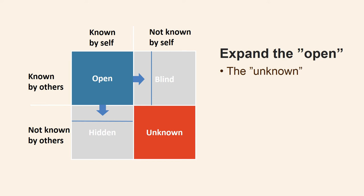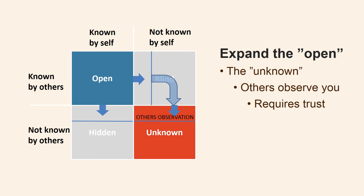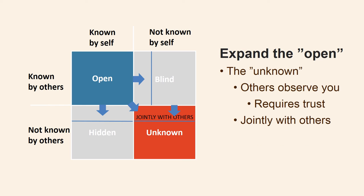You can also expand the open quadrant into the unknown quadrant. You can actively ask others to observe you in different situations — how do you deal with a critical customer, or how do you react to stress? This last aspect is mandatory for all pilots. If you do it voluntarily, remember to be critical about whom you let observe you, as it requires a great deal of trust. You may also jointly with others expand the open quadrant into the unknown quadrant, which is often the purpose of team building exercises among colleagues. In an ideal team building exercise, all participants get a larger open quadrant in relation to each other, and thereby better communication among each other afterwards.